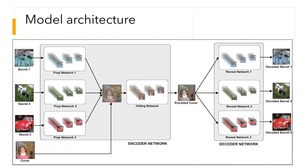As you can see, each of the secret images is passed through the prep network and then concatenated with the cover image. The concatenated image is then passed through the hiding network to generate the encoded cover. The encoded cover is just similar to the cover which was initially passed. This encoded cover can then be used in the decoder network to generate the decoded secrets. There are different reveal networks for each decoded secret.